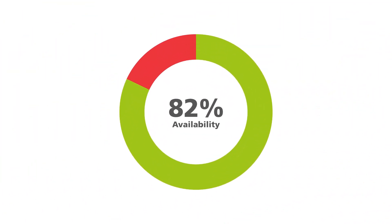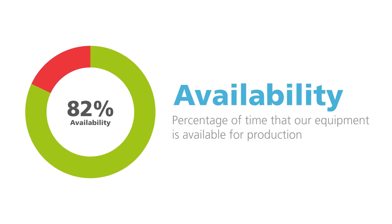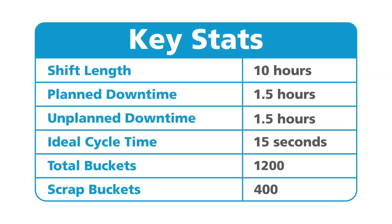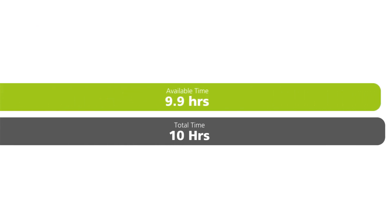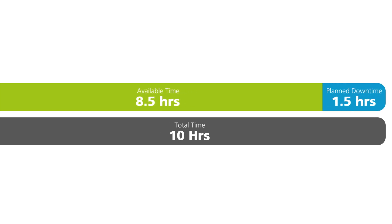Our first factor contributing to our OEE score is availability, which measures the percentage of time that our equipment is available for production. OEE doesn't take into account time where the machine is planned to be unavailable, so we need to start by subtracting our planned downtime from our total time. This leaves us with 8.5 hours of available time for the machine to function, and is the point where we begin calculating our OEE from.